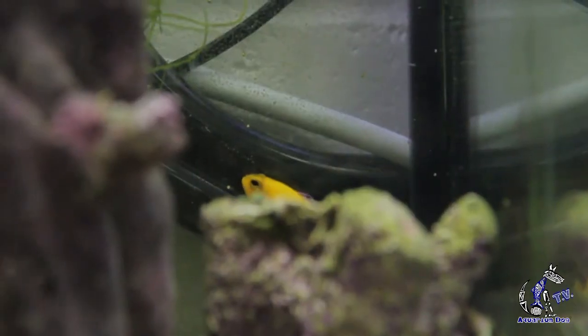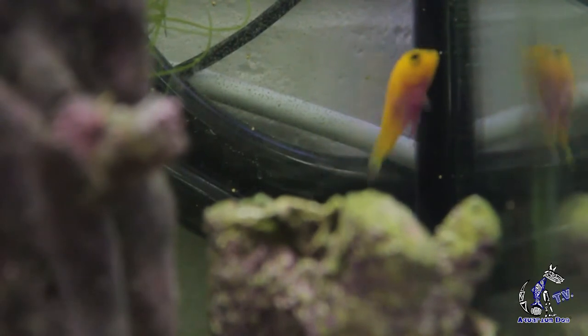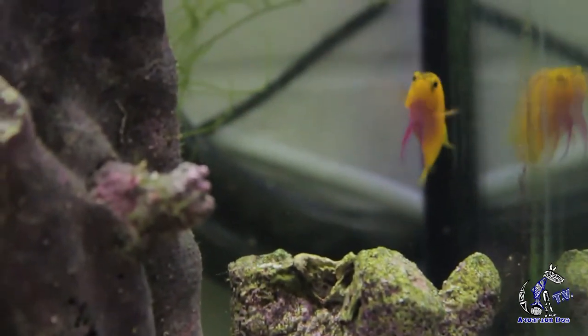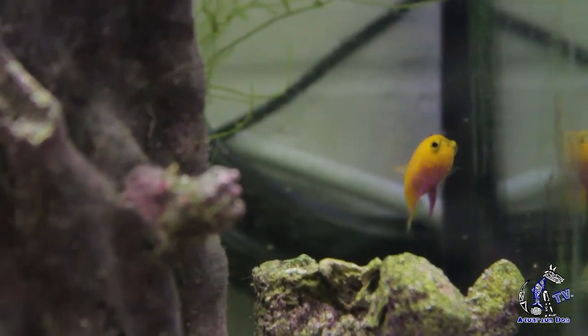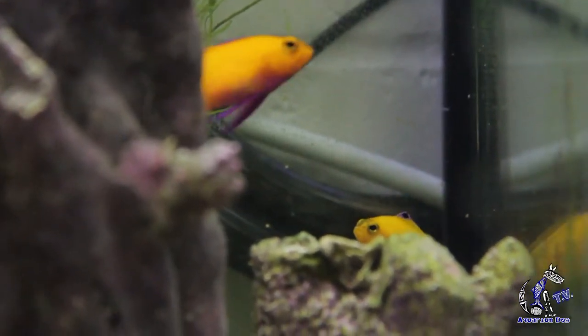And then this is Gramma dejongi. This is the one that's endemic to Cuba, and these guys just started producing a couple of months ago, and we have our first babies coming through from these. There's three and three.